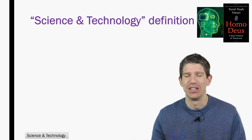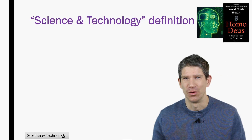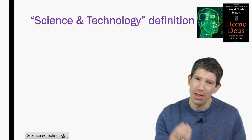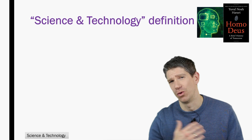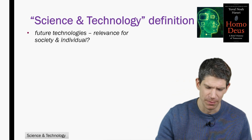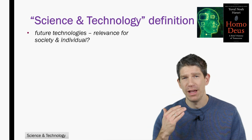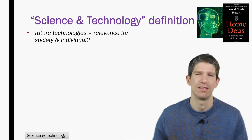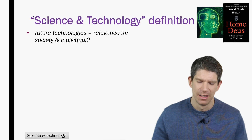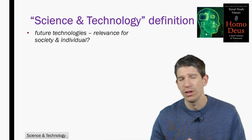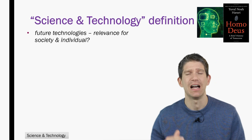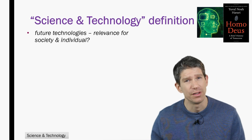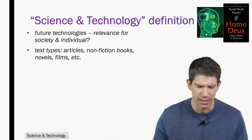What does it mean, science and technology in this context? As I said before, it's not about the scientific details. It is more about other aspects connected to technology. If we have a current technology that is really cutting edge, or technology that is going to exist in the future that we see developing itself, the question is how is this relevant for the individual and how is this relevant for our entire society?